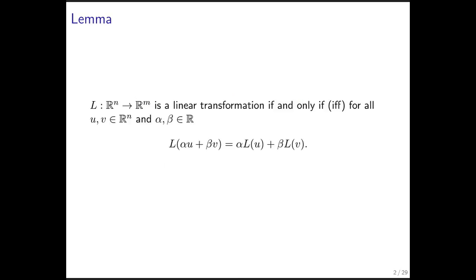We defined a linear transformation as a vector function that has the special property that if you scale first and then transform, or you transform first and then scale, you get the same result. And if you add two vectors first and then transform the result, you get the same result as if you first transformed the individual vectors and then added the results together.